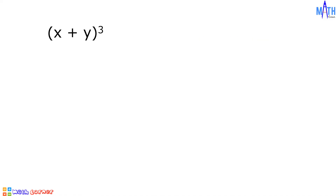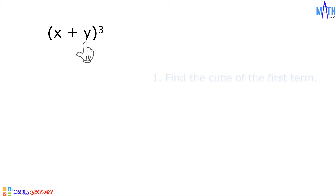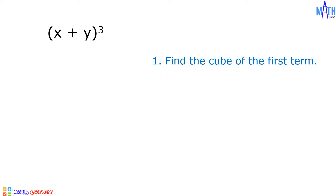Example number 1, let us find the cube of x plus y. In this binomial, the first term is x and the second term is y. Step number 1, let us find the cube of the first term. Cube of x is equal to x cubed.